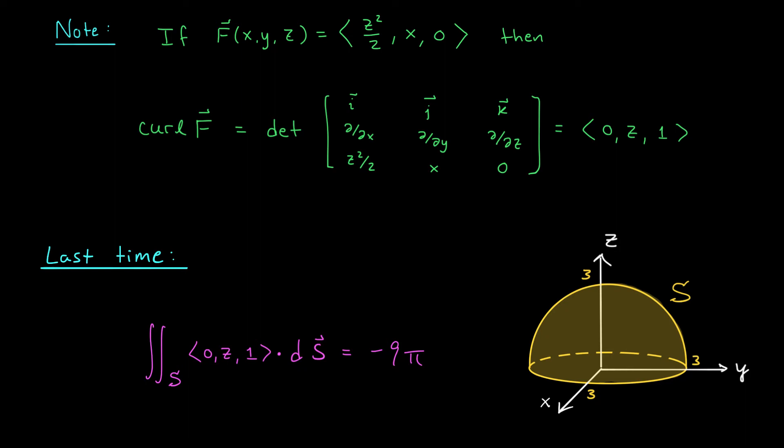Wait a second, -9π? Didn't we just show that the surface integral was 9π? We did, but this time we're using outward orientation. In the example from the last video, we were using inward orientation. So if we were to switch the orientation, we would expect the answer to be multiplied by -1. The point here is that Stokes' theorem saved us a ton of time. It's a fantastic theorem.